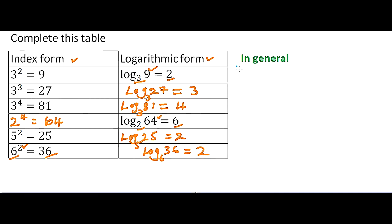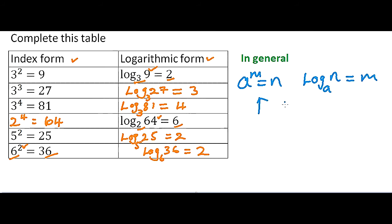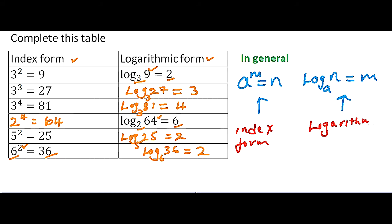In general, from what we have worked out in the table, if we are given a to power m equals n, then we can write the logarithmic form as: the logarithm of n to base a equals m. In this case, a to power m equals n is the index form, and log of n to base a equals m is the logarithmic form. You can now convert from one form to the other using the same logic we have followed.